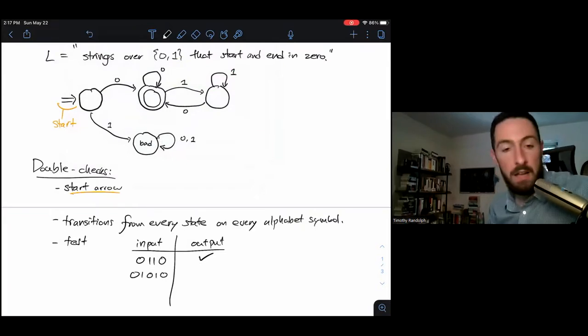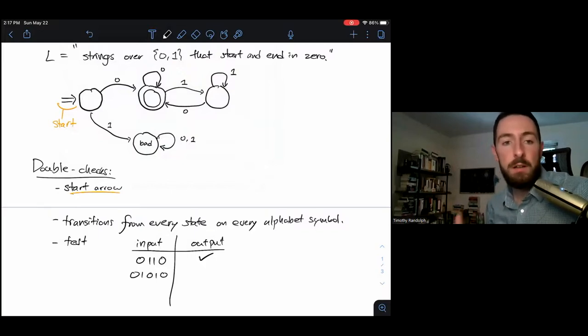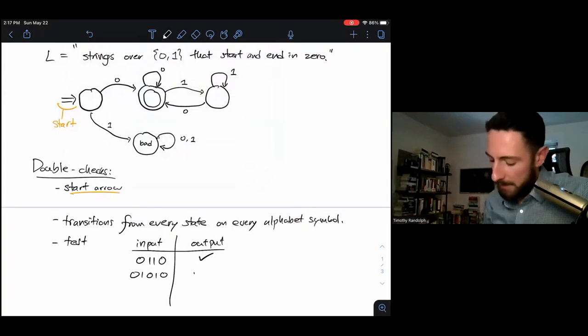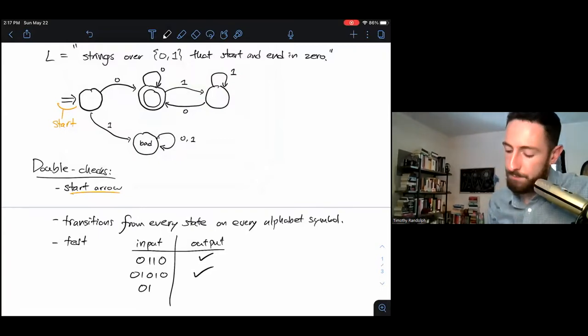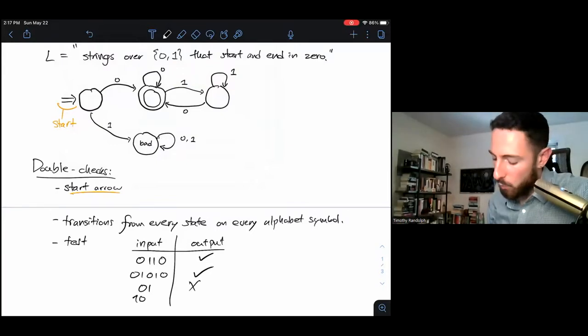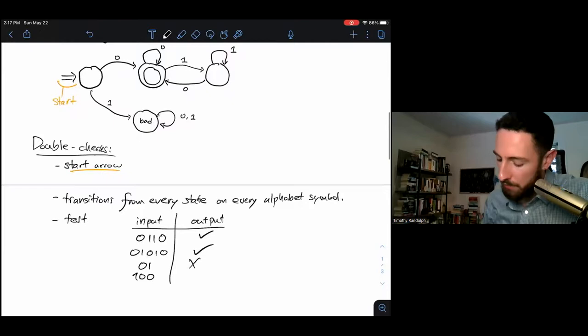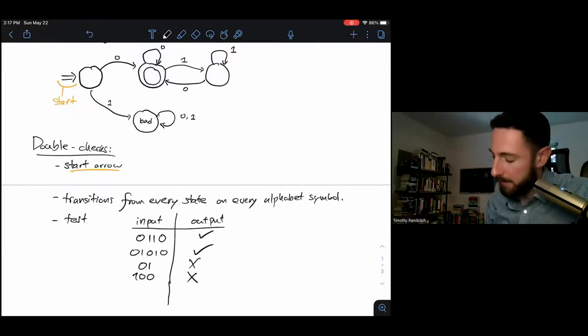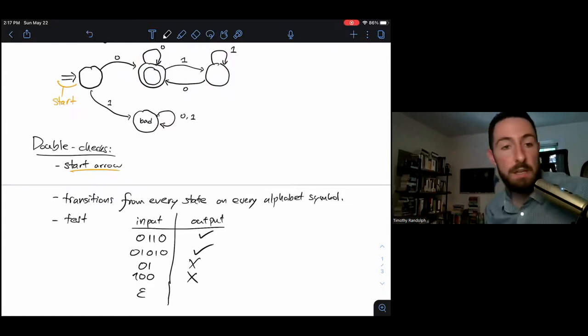If my input is 01010, I'll let you guys work that particular example, but I'm going to go from state 1,2 to 3, back to 2, to 3, and then to 2. That's also an accept. On 01, I'm going to go from the first state to the second state to the third state and end not in an accept state - that's a reject. On 100, I'm going to move to state bad and never get out. That's a reject. And finally, on the empty string, always worth testing, I will start at my start state, go nowhere, and end. So that is also a reject.